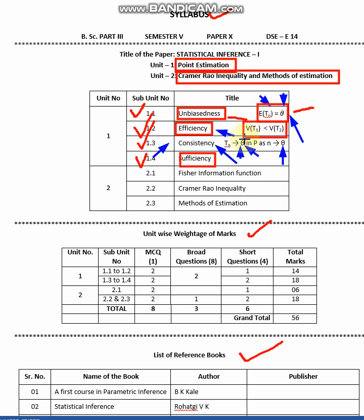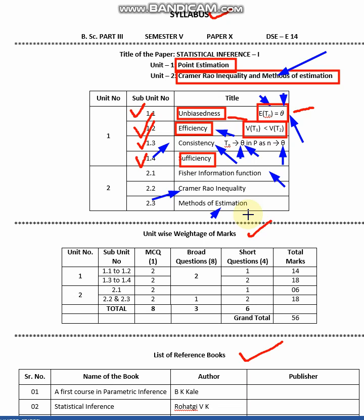Once we understand all these properties, we move to unit two: Cramer-Rao inequality and methods of estimation. Fisher information relates to sufficiency — it gives information sufficient to understand the population parameter theta. In the Cramer-Rao inequality, we understand the lower bound for the variance of T_n. While in efficiency we calculate variances, we also need to know the exact lower bound for variance. The methods of estimation include two approaches: maximum likelihood estimation and the method of moments.